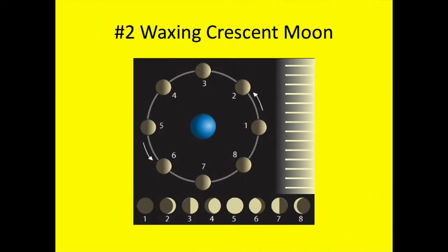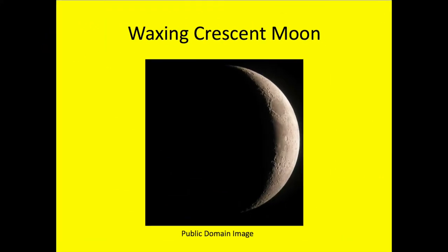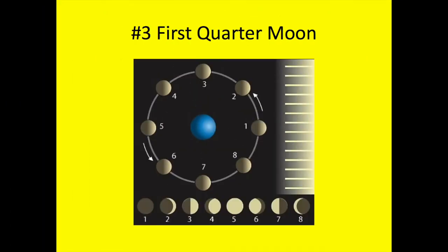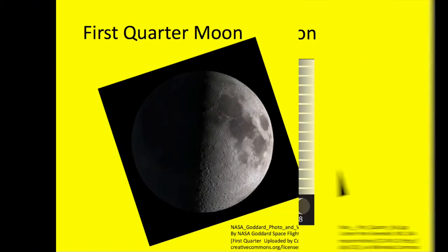In phase 2, the waxing crescent moon, we see a thin crescent that waxes or appears to grow fatter every night. Phase 3 is the first quarter moon and we can see half the moon.